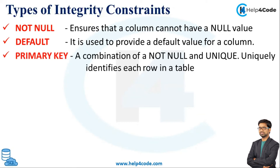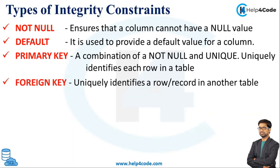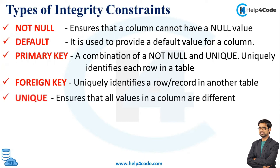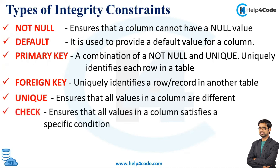Next we will discuss about the Primary Key constraint. A Primary Key constraint is the combination of Not Null and Unique — it uniquely identifies each row in a table. Then we will discuss the Foreign Key constraint, which uniquely identifies a row or record in another table, and that relation is with the primary key table. Next is the Unique Key constraint, which ensures that all values in a column are different, meaning unique.